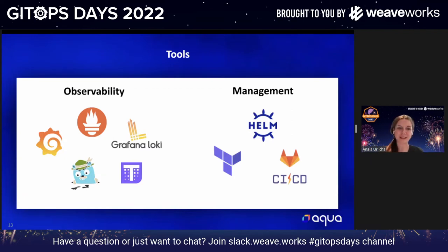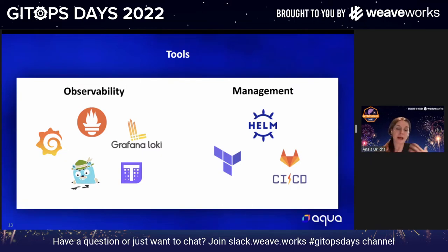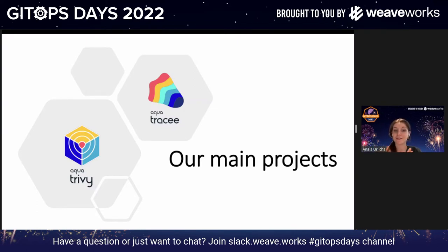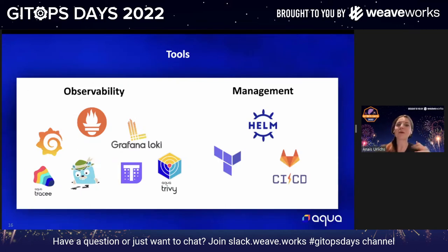When I got started in site reliability engineering last year, we were using different tools. We were trying out GitOps in staging environments but not yet in production. When I later started looking into security tools and joined Aqua Security, I discovered Trivy and Tracee. I'm going to focus on integrating Trivy into your GitHub workflow. Trivy is our open source security scanner, and Tracee is a runtime forensic tool that uses eBPF under the hood — we won't cover Tracee in this presentation, as it's a whole topic on its own.